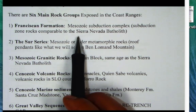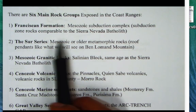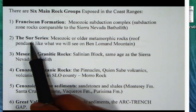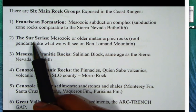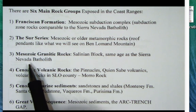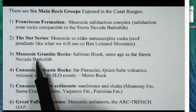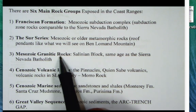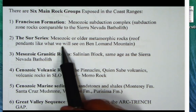The second group in the Coast Ranges is the Sur Series, named after Big Sur. The Sur Series are mostly metamorphic roof pendants, all metamorphosed by intrusion of the third group — Mesozoic granitic plutonic rocks, mostly Cretaceous in age, very similar to the Sierra Nevada batholith.